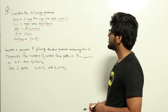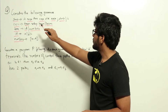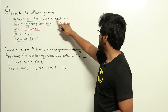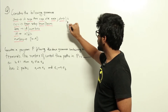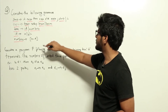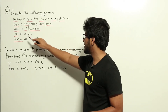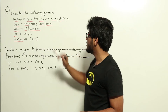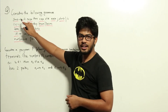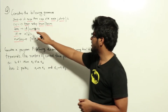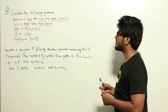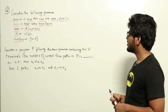Consider the following grammar: statement → if expression then expression else expression semicolon statement, or ε. Expression gives term relational-operator term, or term. Term gives ID or number. ID gives a, b, or c. Number gives 0 to 9. In this grammar, the underlined variables are non-terminals, and the rest are terminals.